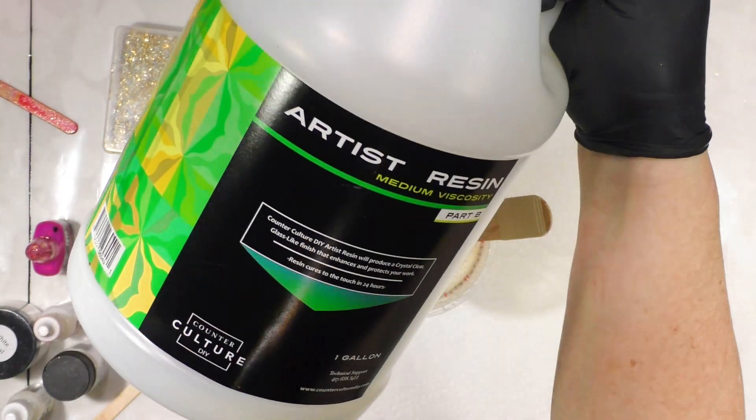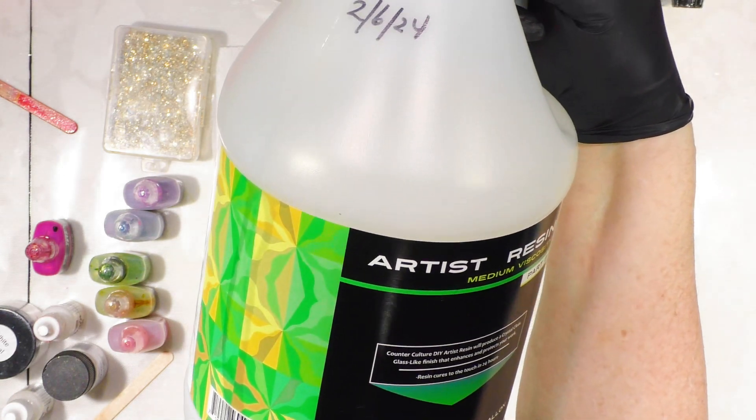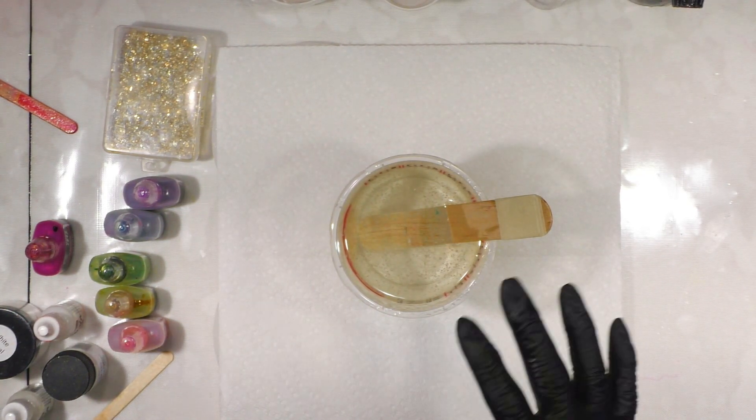Today I'm using Artist Resin Medium Viscosity by Counter Culture DIY, the green and yellow label. My go-to resin for any kind of special effects.